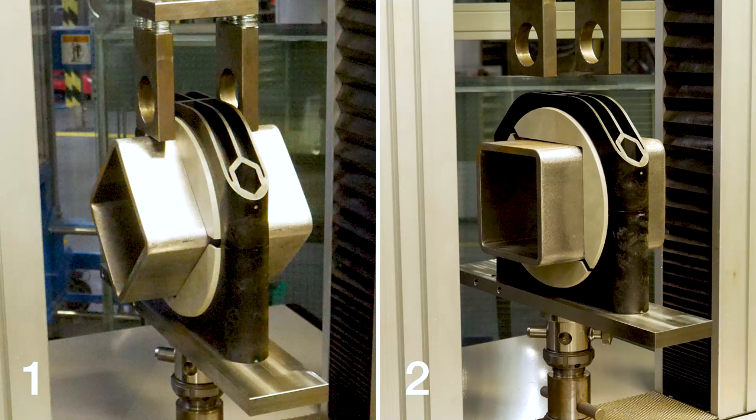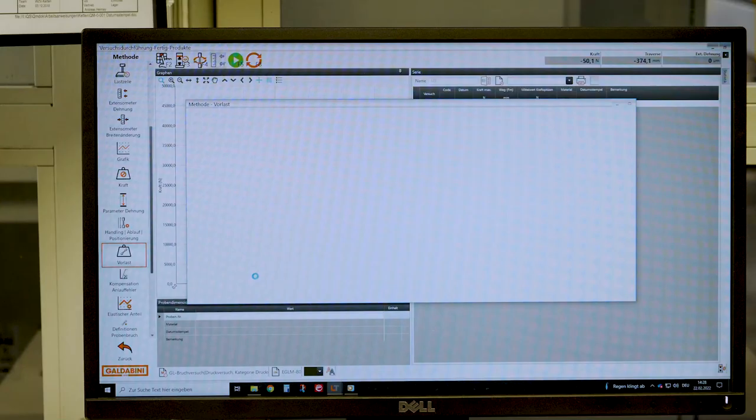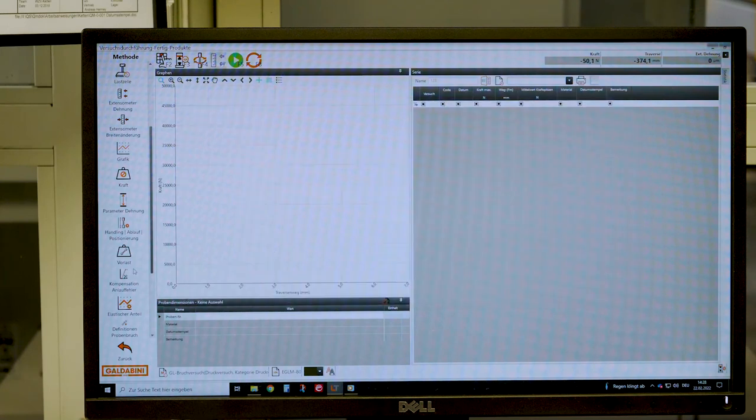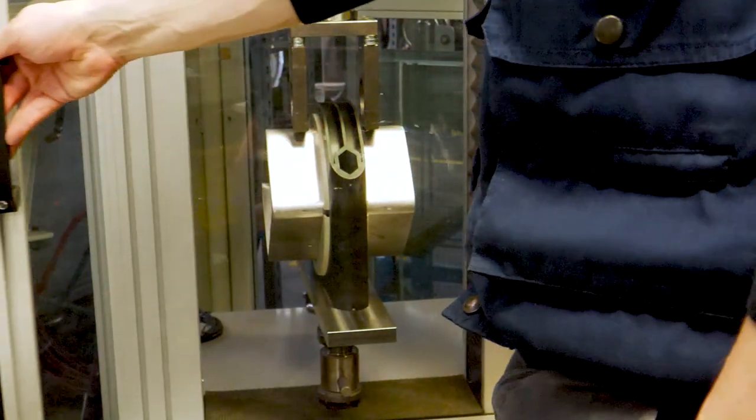At first we test the pointed alignment of the profile and then the flat alignment. The next step is to set the parameters of the test such as speed, preload, and break-off criteria, and then we start the test.